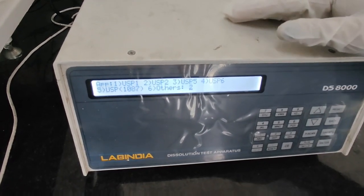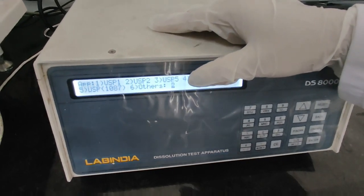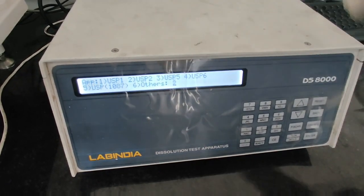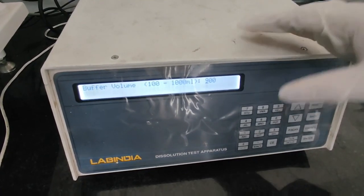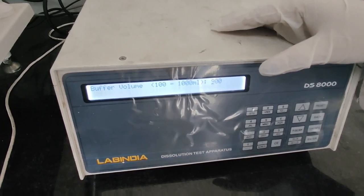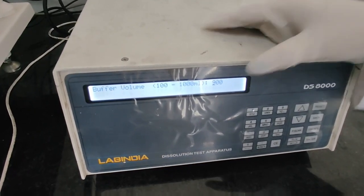Again press enter. As we are using USP apparatus 2, that is paddle type apparatus, already 2 is written. If you want to use basket, you may press 1. Now I will press enter. Then about the volume, I want 900 ml. It is already there. If you want to change it, you can change it from here.